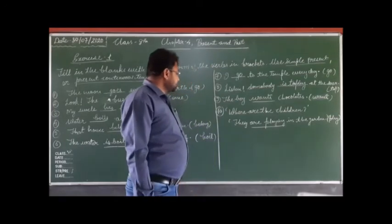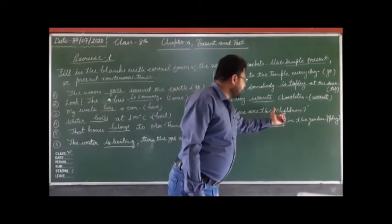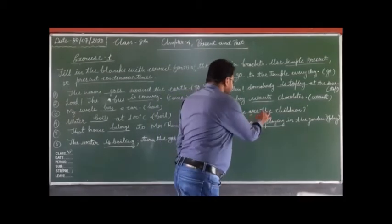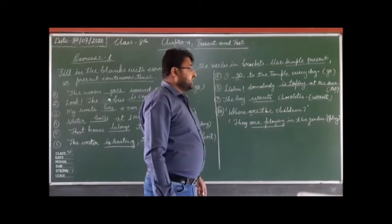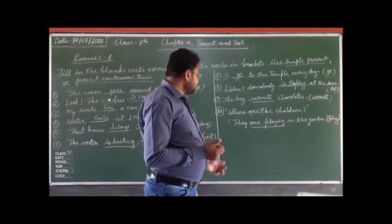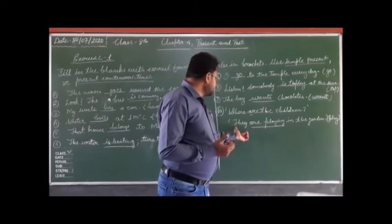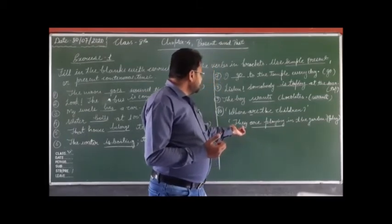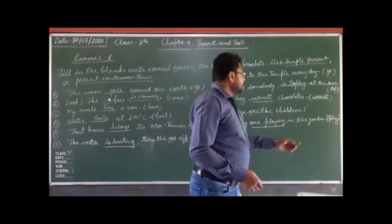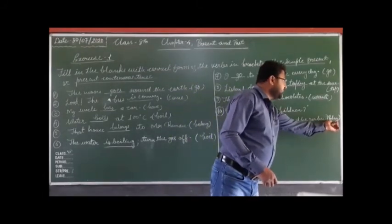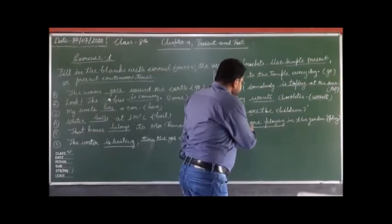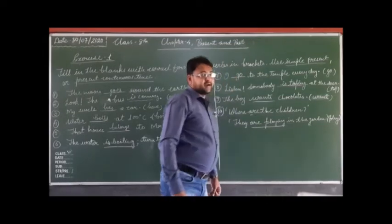The tenth sentence is: where are the children? This shows a continuous activity of the present, so it is present continuous. The sentence will be: they are playing in the garden. The verb form 'play' is changed to 'playing' and the sentence will be: they are playing in the garden.